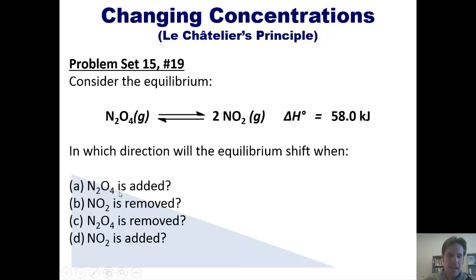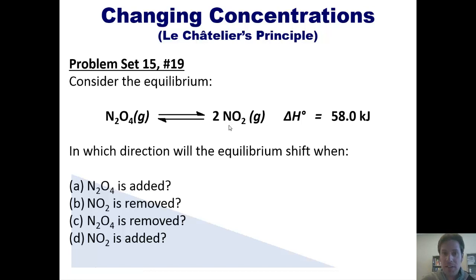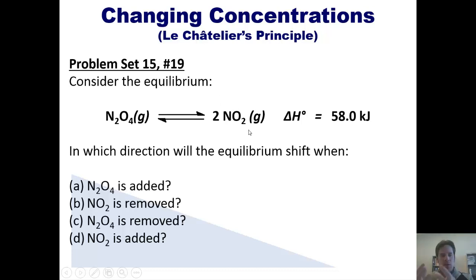Let's begin with part A. If I add N2O4, the left side is heavy. I need to restore balance by removing N2O4 and forming NO2. So the equilibrium will shift to the right, converting N2O4 to NO2. Now for part B: what occurs if NO2 is removed? Now I have a gaping hole on the right side of the equation, so the equilibrium has to fill that hole by also shifting to the right, converting N2O4 into NO2. That will decrease the amount of N2O4 and restore the amount of NO2 until balance is restored.